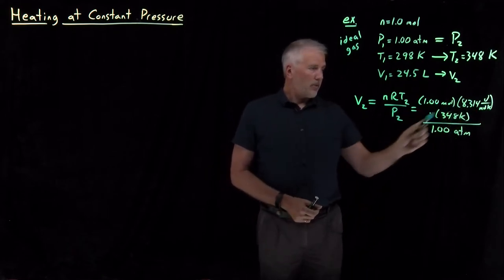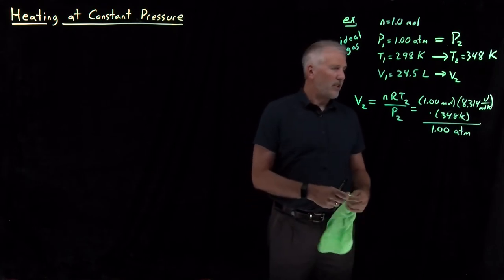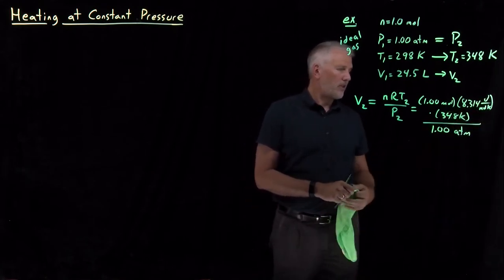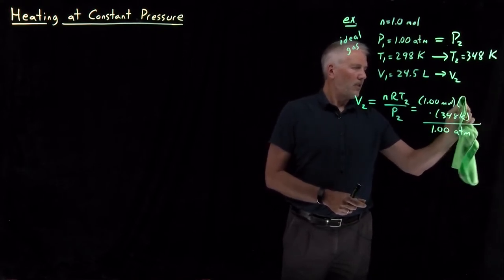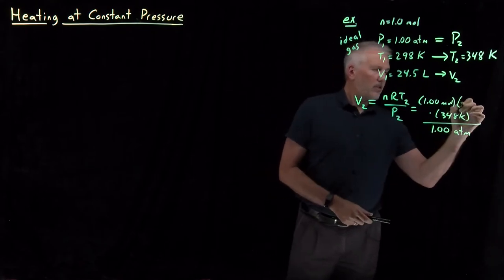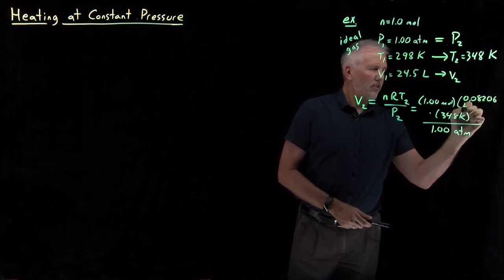I realize it's a good thing I was going to double check my units because my units are not working out. Rather than using the gas constant in units of joules per mole Kelvin, I need to cancel some units of atmospheres, so I'm going to instead use the gas constant as 0.08206 liter atmospheres per mole Kelvin.